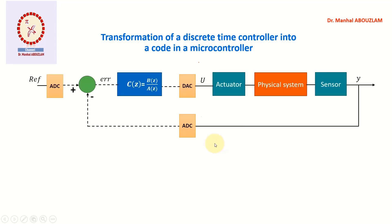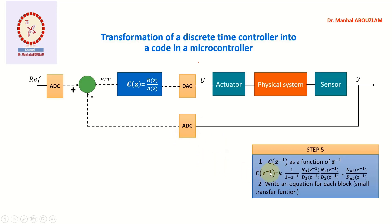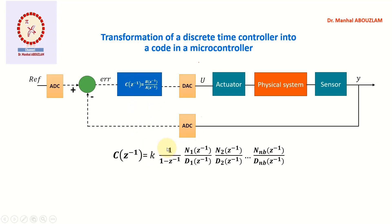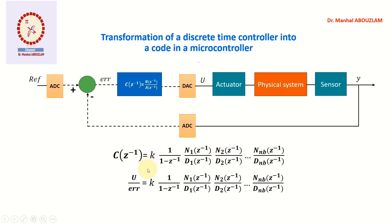We will consider our controller as a function of z power negative one, so we can write our controller as a function of z power negative one. Our controller is a transfer function between the control input u and the error. So the input for our transfer function is the error, and the output is the control input u — both digital signals.